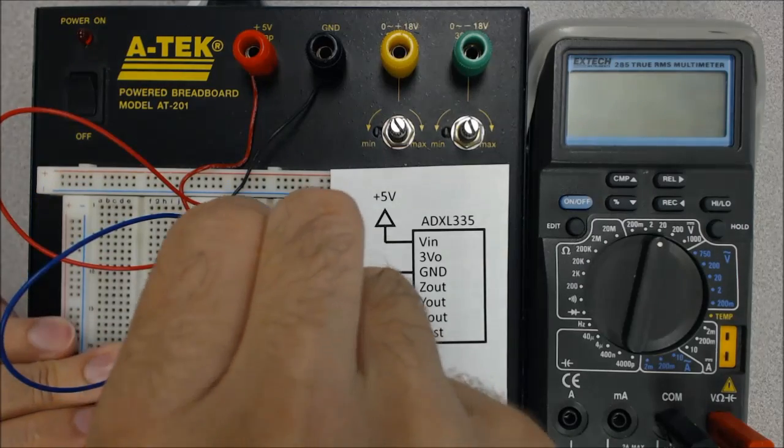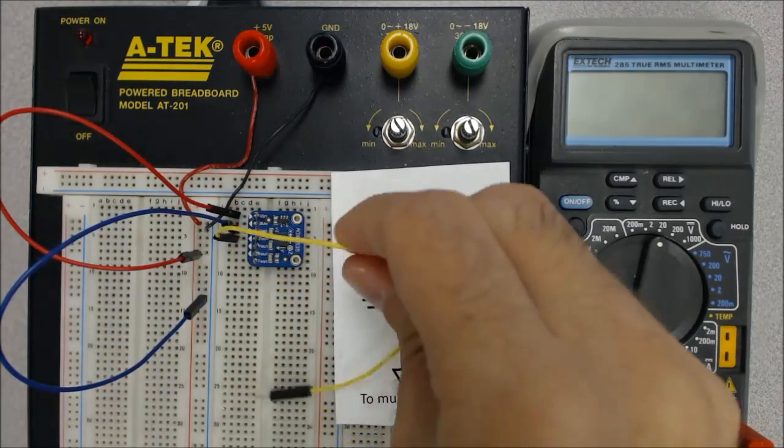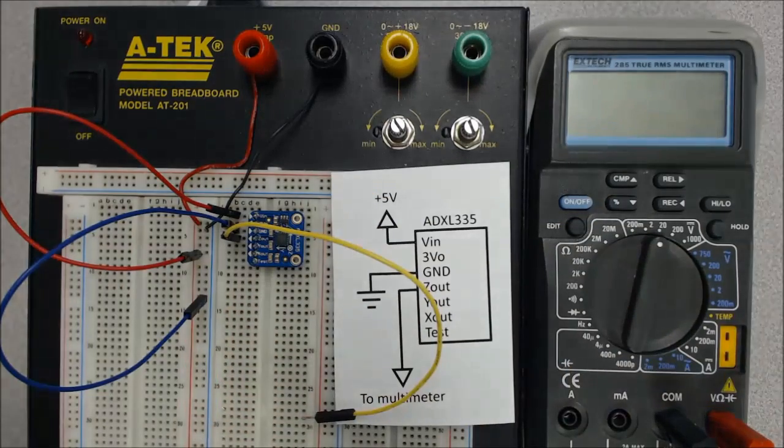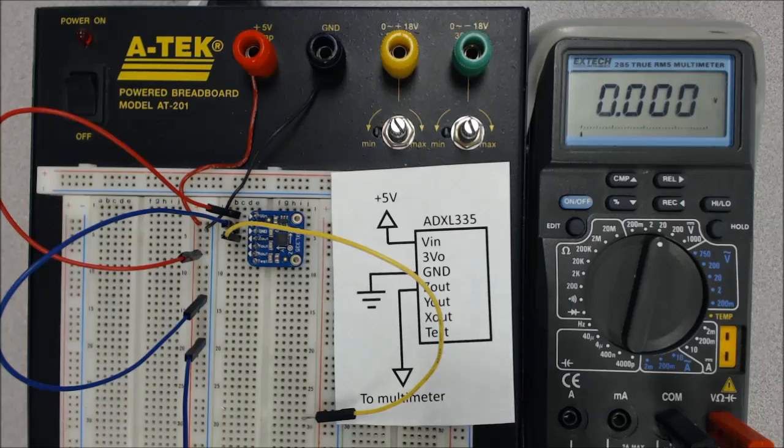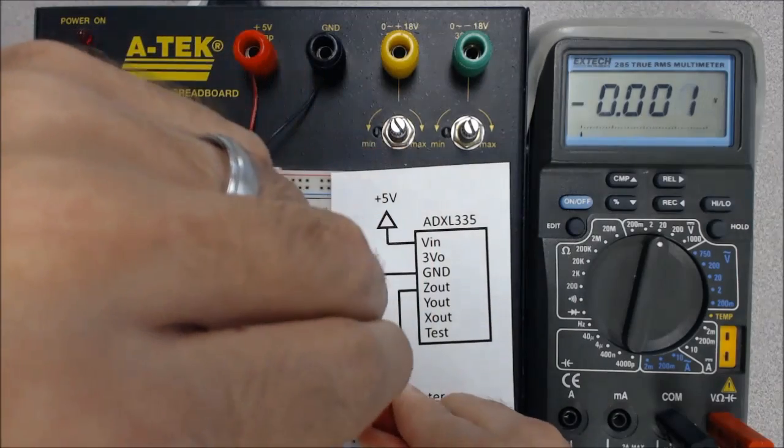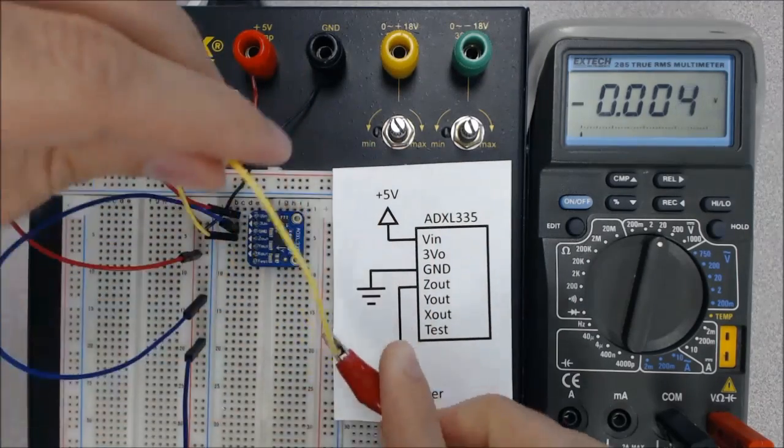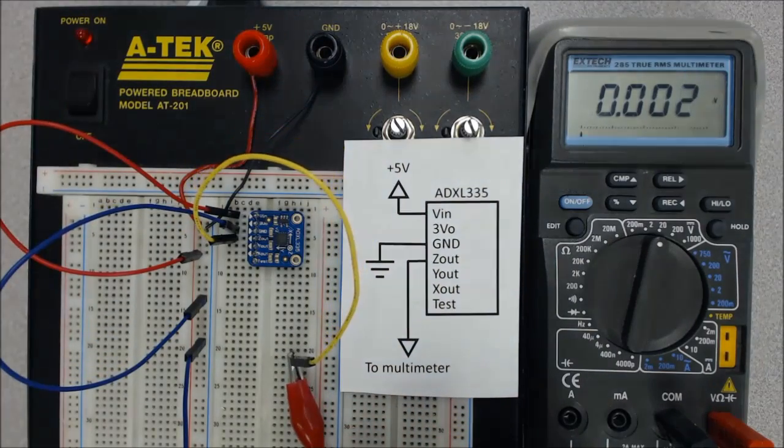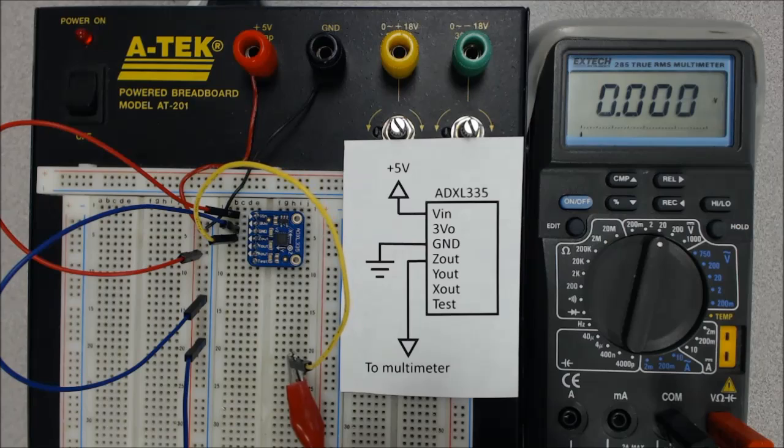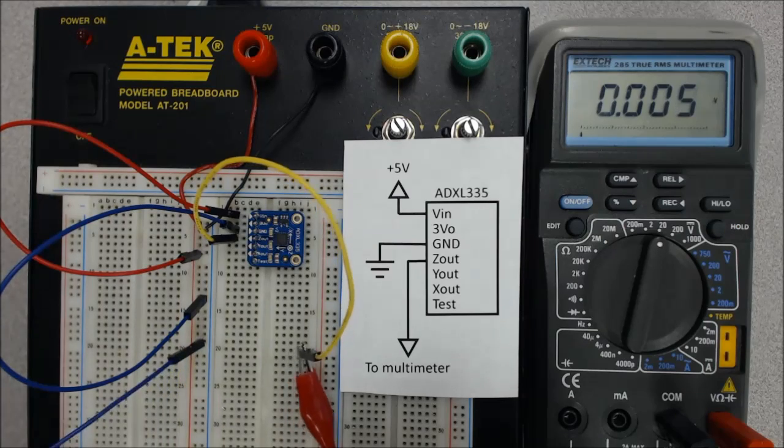And then I'm going to measure Z out. So I'll put a wire in Z out. And I need a reference for that measurement too. So again, just to reiterate, if I were to just put the red wire from my multimeter onto the signal wire, where it says 2 multimeter, and turn on the breadboard, nothing would happen. I need to give this measurement some reference. So I'm going to connect the black wire from the multimeter to ground.